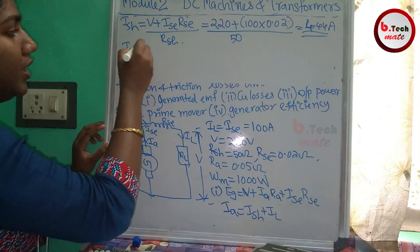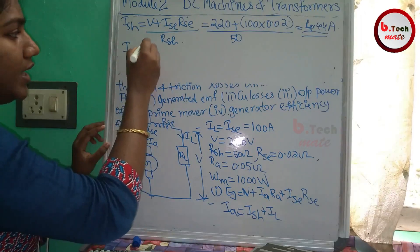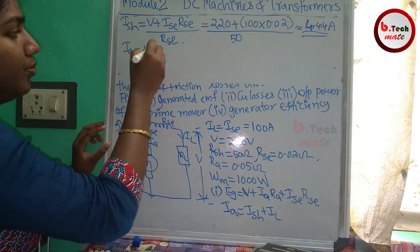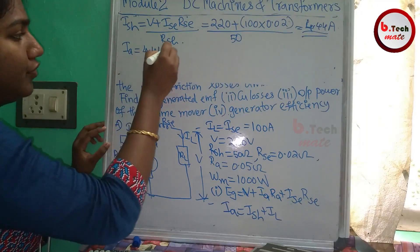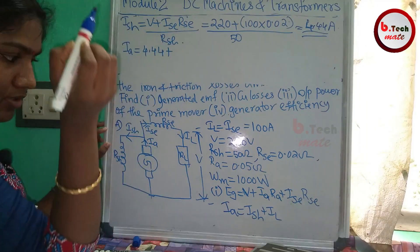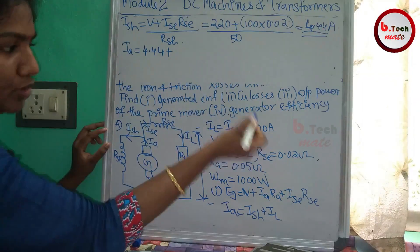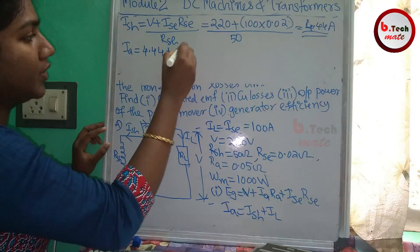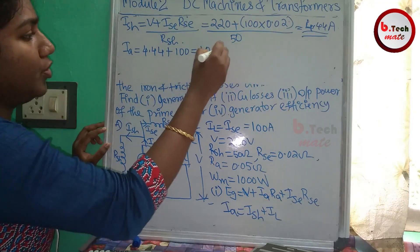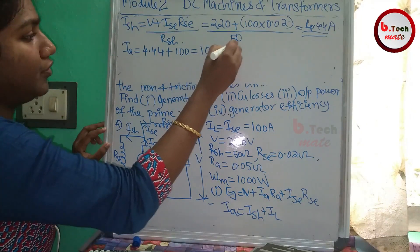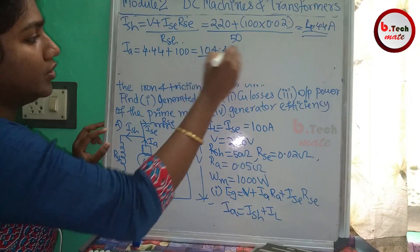IA is equal to ISH plus IL, which is 4.44 plus the load current of 100, giving IA equal to 104.44 Ampere.